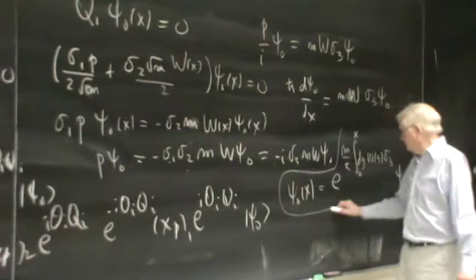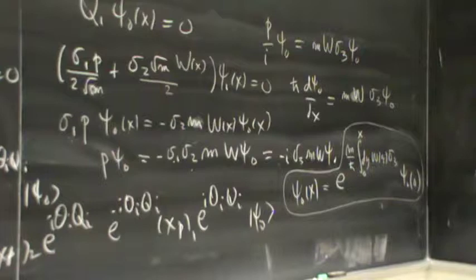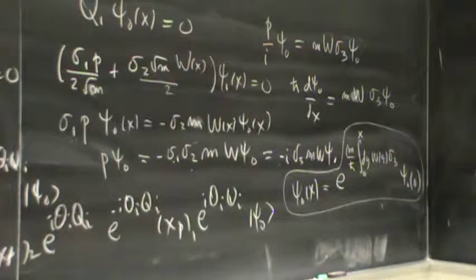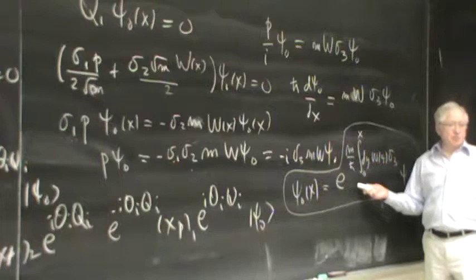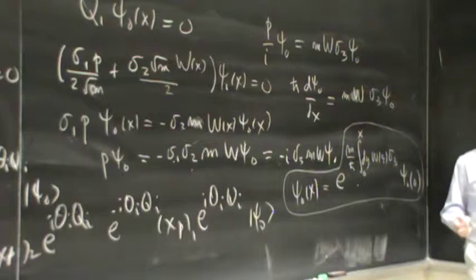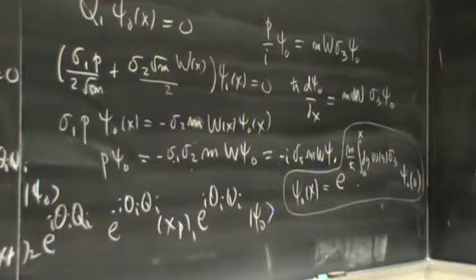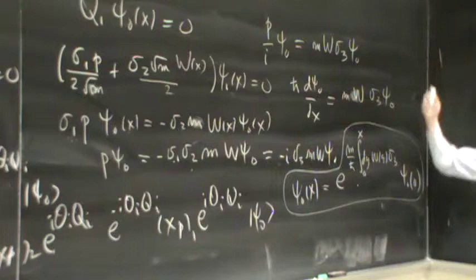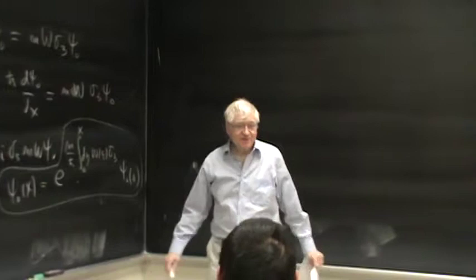At first sight you might say that every supersymmetric quantum mechanical theory has an eigenstate of zero energy, since we just found one. But upon reflection, this thing has to be normalizable to be an actual quantum state. If instead the norm is infinity, that's no good. We said that |W(x)| goes to infinity in one way or another, and W itself can do various things.